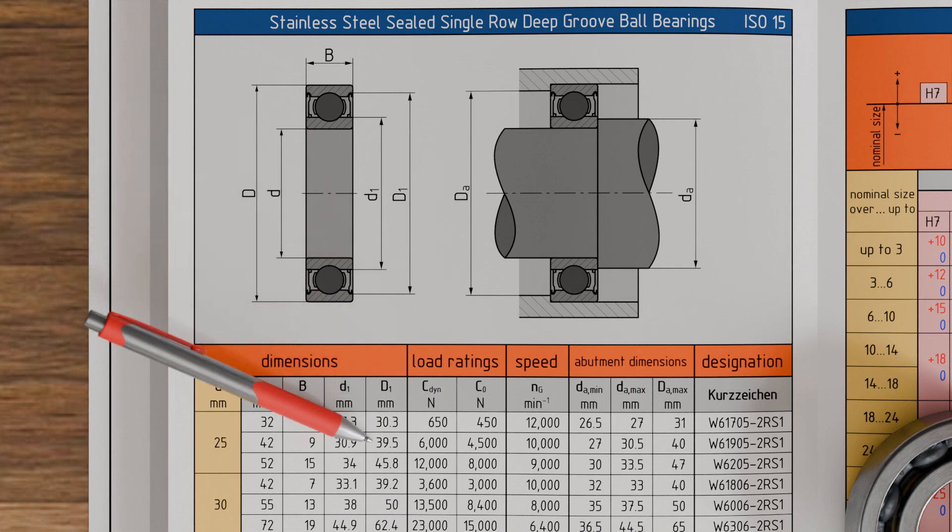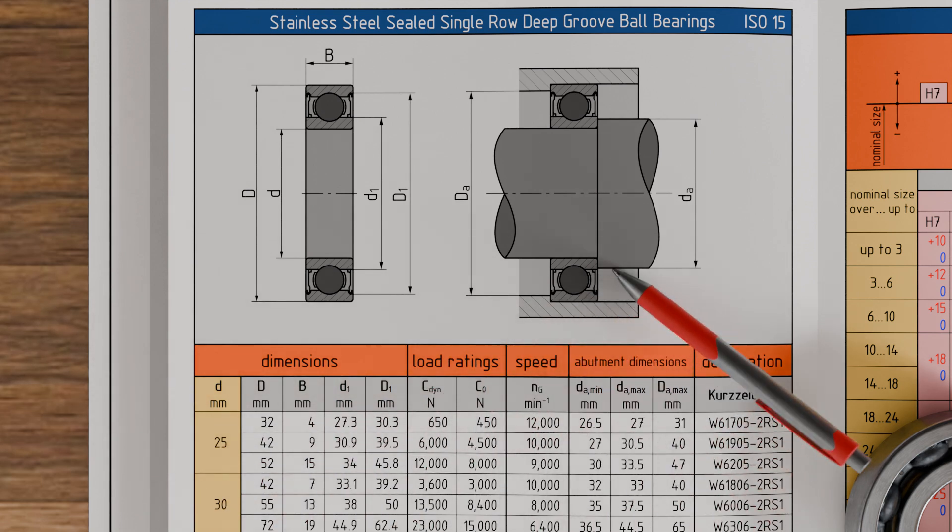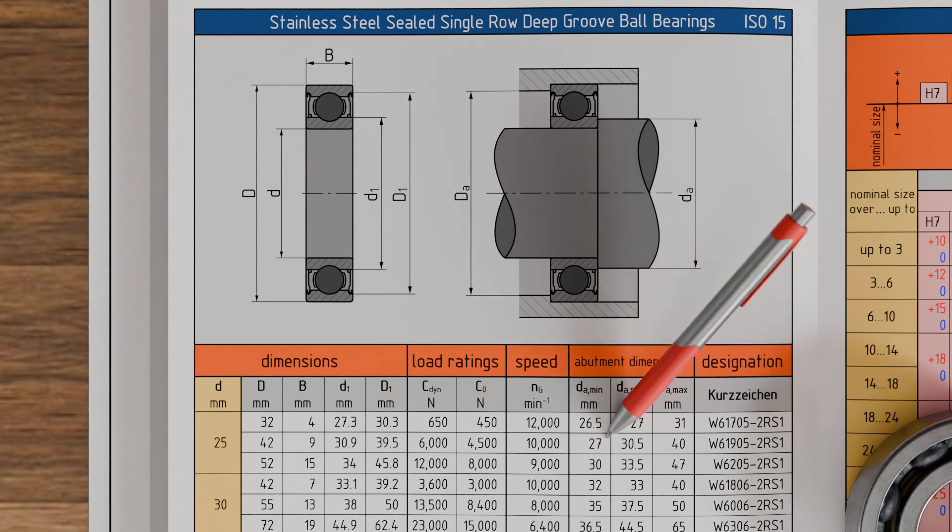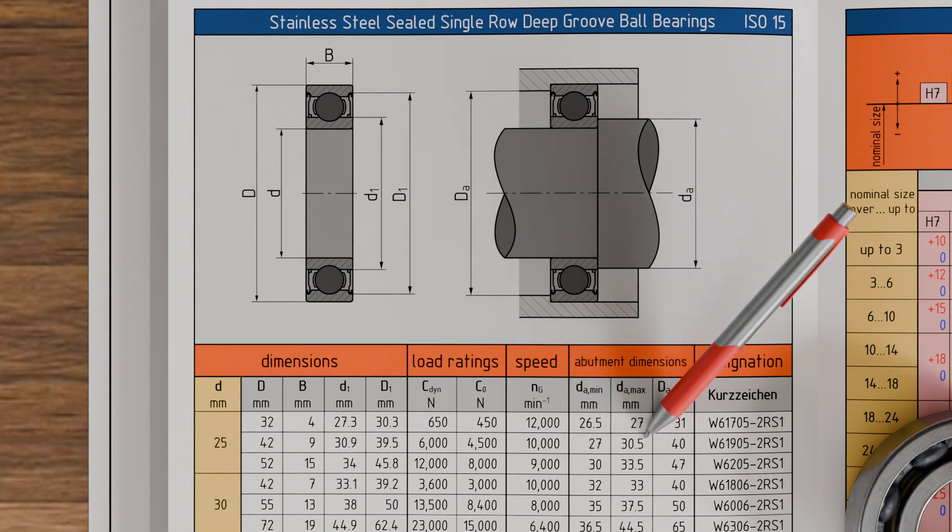Furthermore, the rolling bearing manufacturer specifies the abutment dimensions for the bore and shaft, since the shaft shoulder must not be smaller than a certain minimum diameter nor exceed a maximum diameter. Otherwise, the required support surface for the bearing inner ring is not ensured, which can lead to insufficient axial support or assembly problems. In our case, the shaft shoulder must measure at least 27 mm in diameter and must not exceed 30.5 mm.